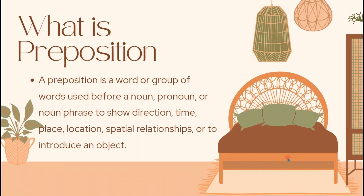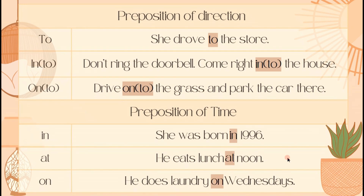What is a preposition? A preposition is a word or group of words used before a noun, pronoun, or noun phrase to show direction, time, place, location, spatial relationships, or to introduce an object. Here we have a preposition of direction: 'she drove to the store.' The preposition here is 'to,' and 'the store' is the object of the preposition — not the direct object of the verb 'drove.'